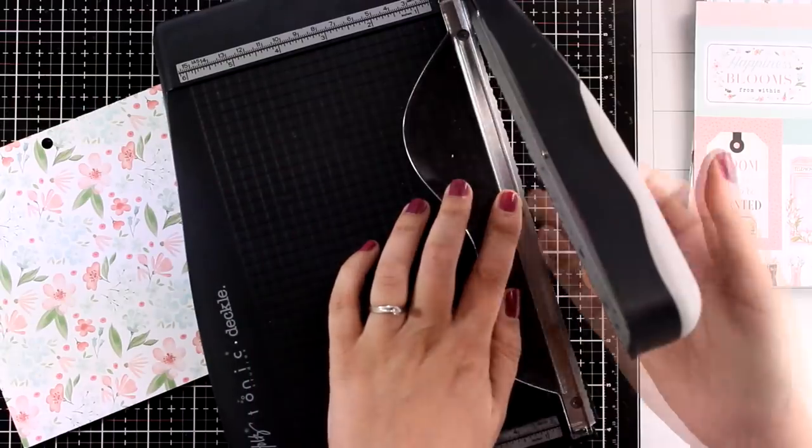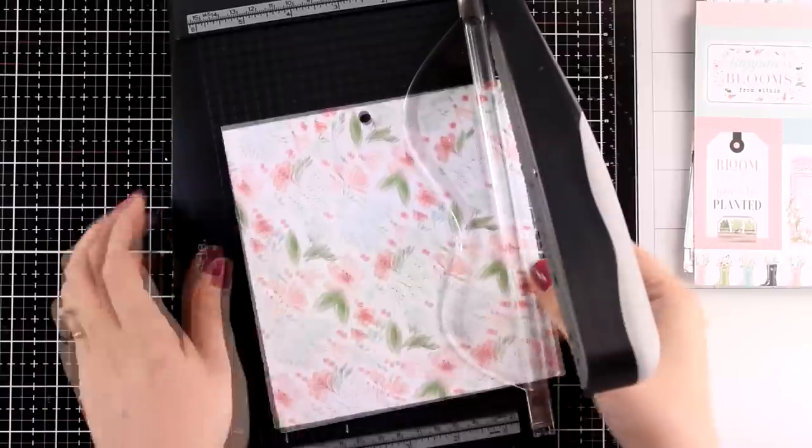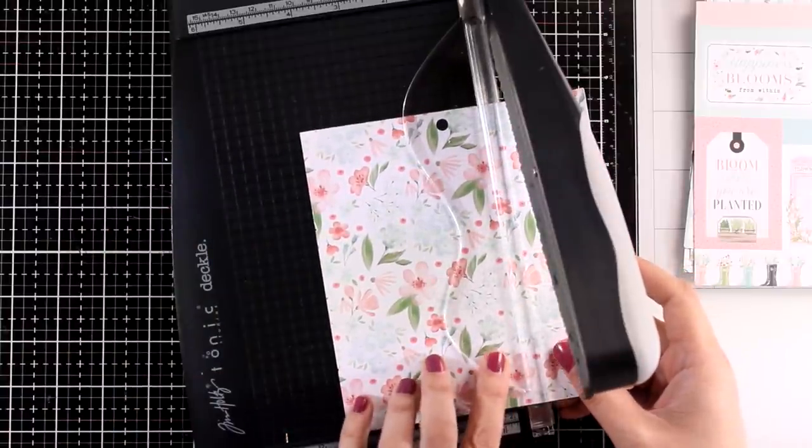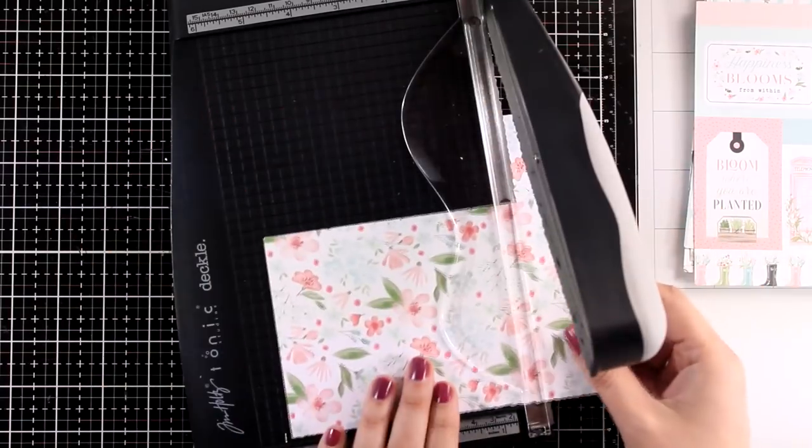The paper pad included in the kit has lovely designs perfect for spring, and I'm going to use my deckled edge trimmer to cut out a couple of panels. I'm using this beautiful flower paper and another one that matches the pink of these flowers.